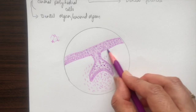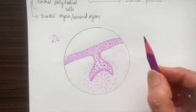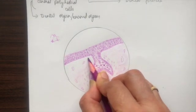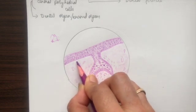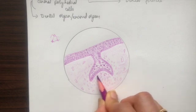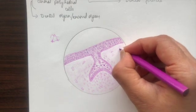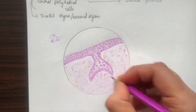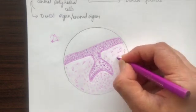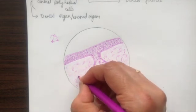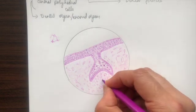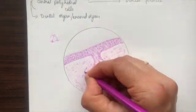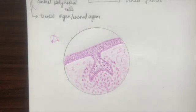Then we draw around it the dental follicle cells and shade the ground substance. Before shading, please draw the blood vessels — we don't want ground substance inside the vessels, as vessels will have blood cells inside. Now we make the fibroblasts of the general ectomesenchyme and the collagen fibers, darken the condensed ectomesenchymal cells, and make the nucleus inside these ectomesenchymal cells.